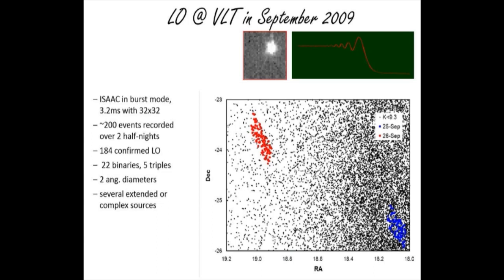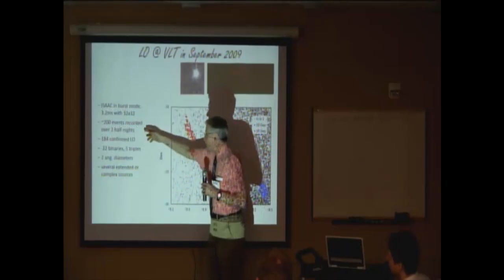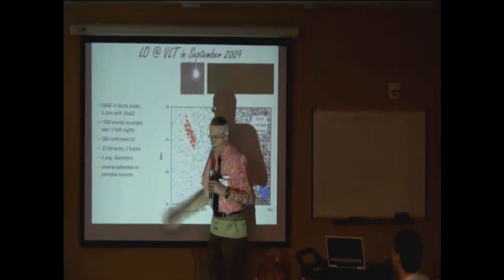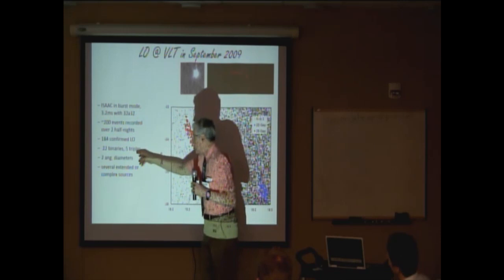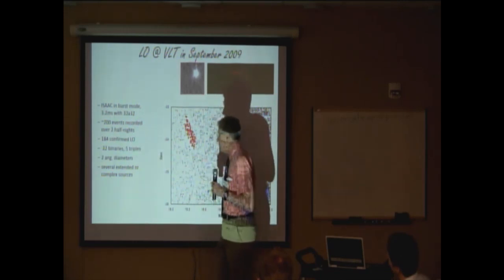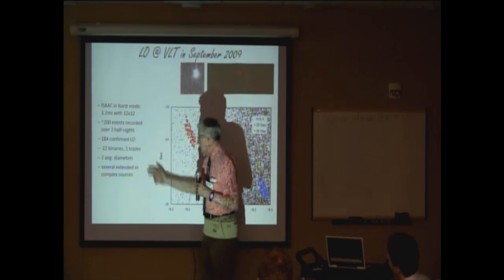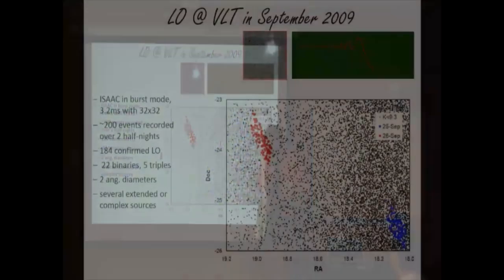Some of the results from the VLT were obtained in September 2009 when the moon passed through the central part of the galactic region — you can see from the right ascension of 18 hours and declination that this is the interesting central galactic region. They used the so-called ISAAC instrument with 3.2 millisecond time resolution, and about 200 events were recorded in two half-nights. From those, 22 binary stars and 5 triple stars were resolved, two angular diameters were measured, and there were several interesting extended or complex sources.